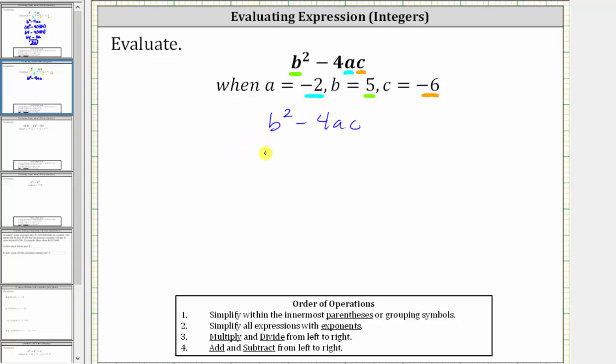B squared is equal to five squared, and then we have minus four times a times c, which gives us minus four times a, which is negative two, times c, which is negative six.